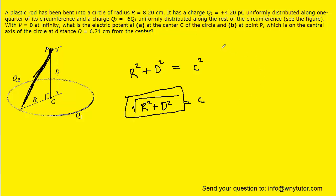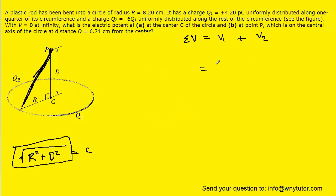But otherwise, it's a pretty similar question. We know that the total potential is going to equal v1 plus v2, which, of course, we can write as k multiplied by q1 divided by this distance of the square root of r squared plus d squared. And then the same thing over here with v2, k multiplied by q2 over that same distance.